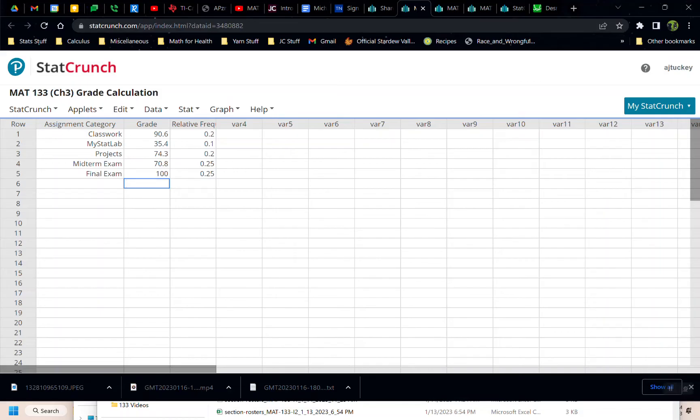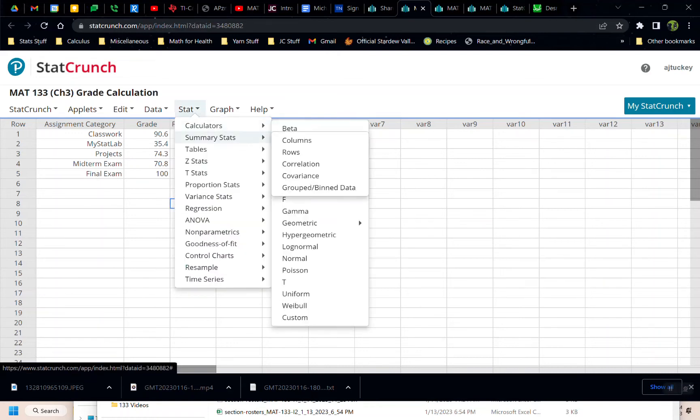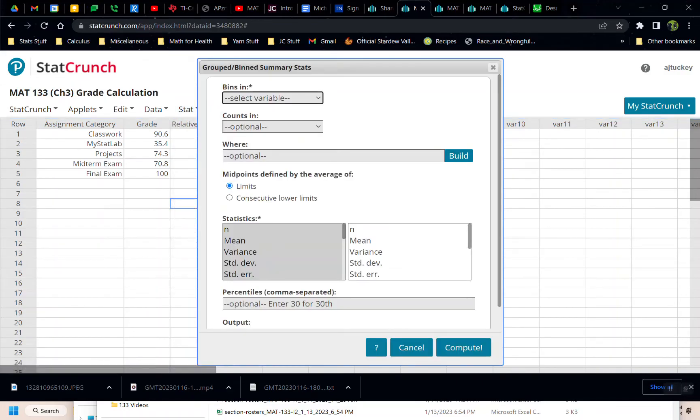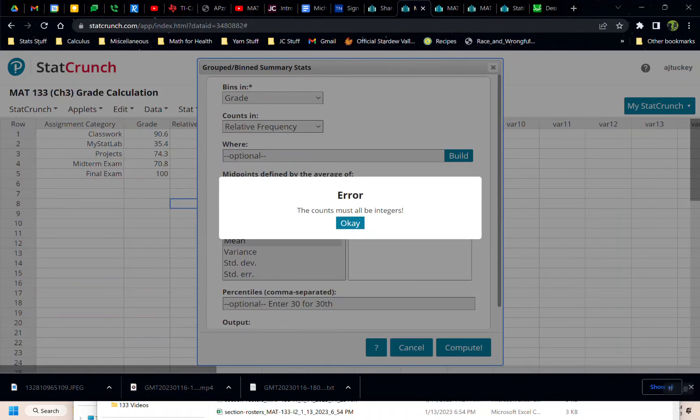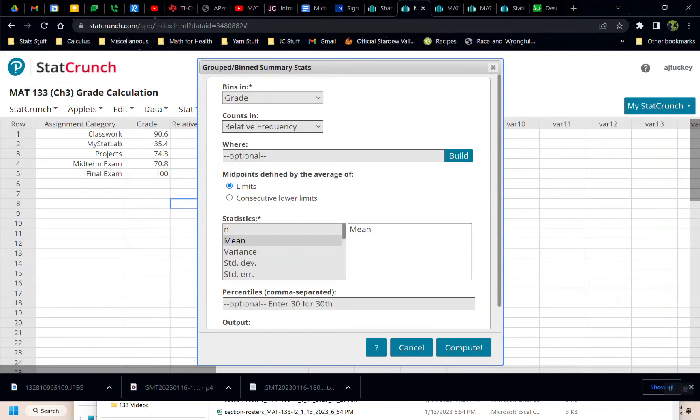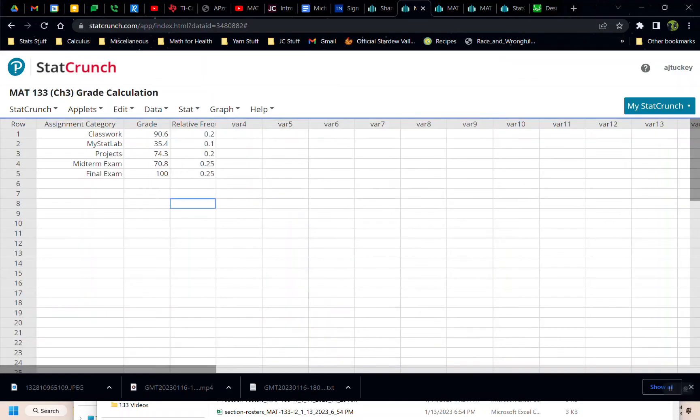I could put 100 in here or I could put 0 in here and find both of those grades. Now here's the kicker. Because these are relative frequencies, we cannot use the normal thing we've been doing. I'll show you. If I try to use stat, summary stat, grouped bin, I tell it the bins are my grades and the counts are the relative frequency. It won't do it. It says the counts must be integers. So there's got to be another way, and there is.